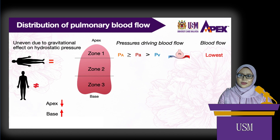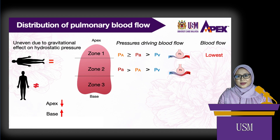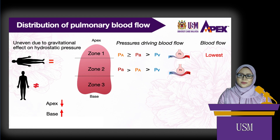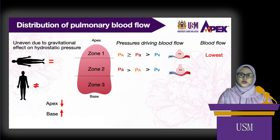In zone 2, because of the gravitational effect on hydrostatic pressure, arterial pressure is higher than in zone 1 and higher than alveolar pressure. But the alveolar pressure in zone 2 is higher than venous pressure. So although there is no compression of the capillaries in zone 2, blood flow is driven by the difference between arterial and alveolar pressure, not by the difference between arterial and venous pressure, which is actually the common driving factor in systemic vascular beds.